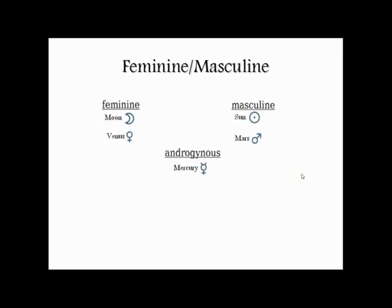Basically, these five planets — the Sun, Moon, Mercury, Venus and Mars — constitute the core elements of our personality: our sense of identity which is the Sun, our communication which is Mercury, our basic awareness and sentience which is the Moon, our sociability which is Venus, and with Mars our ability to assert ourselves and to win in this competitive world.